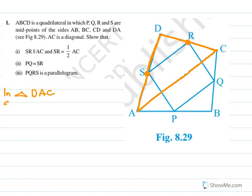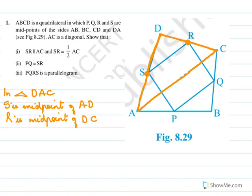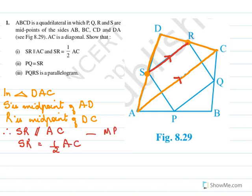In triangle DAC, S is the midpoint of AD and R is the midpoint of DC. Since two midpoints are given, by the midpoint theorem we can say that SR is parallel to AC and SR is half of AC. We write this as equation 1.